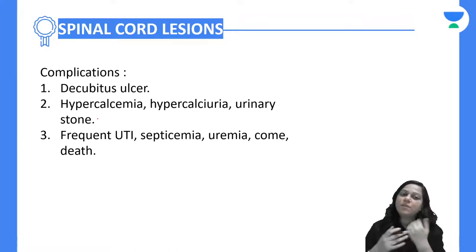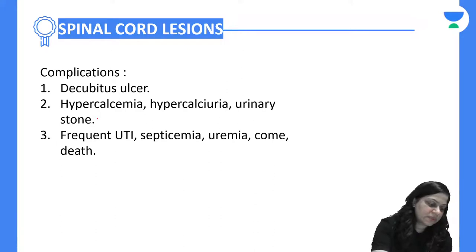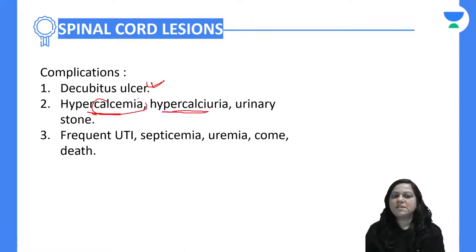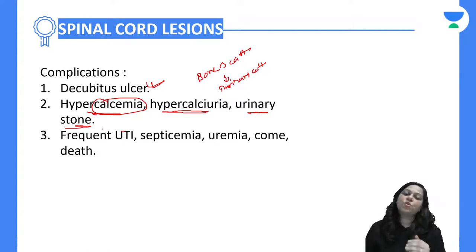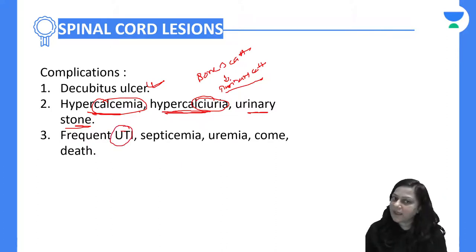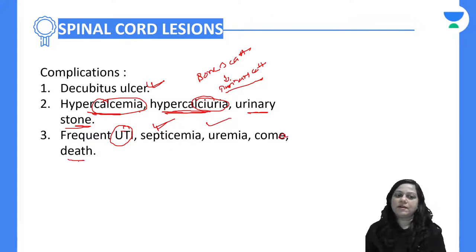What are the possible complications? There can be hypercalcemia and hypercalciuria because the bone loses calcium. With a large amount of calcium in the urine, kidney stones can form due to prolonged immobility plus hypercalcemia. Other complications include frequent urinary tract infections, septicemia, uremia, coma, or death of the individual.